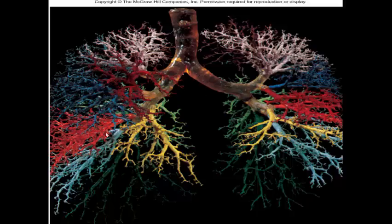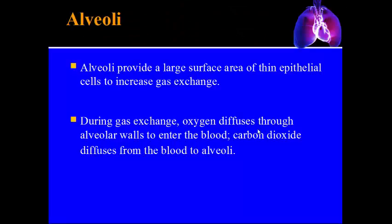Alveoli is the plural term; the singular is alveolus. The alveoli provide a large surface area of very thin epithelial cells to increase gas exchange — this is where all the work in the lungs gets done. Oxygen and carbon dioxide are exchanged through simple diffusion: oxygen diffuses from the alveoli walls into the blood, and carbon dioxide goes from the blood into the alveoli.